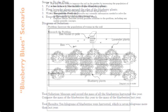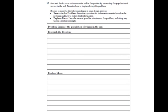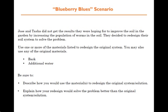The question here is that Tasha and Jose want to improve the soil in the garden by increasing the population of worms, thinking that increases the amount of blueberries. The redesign we're focusing on in this podcast is the next step in this scenario. Teachers at Kentridge High School put together a scenario where Jose and Tasha didn't get the results they were hoping for to improve the soil by increasing the worm population.